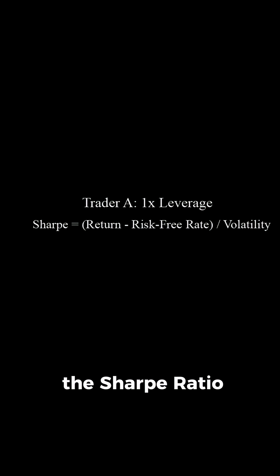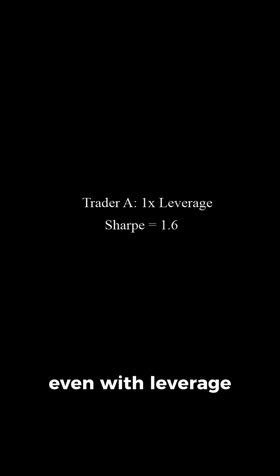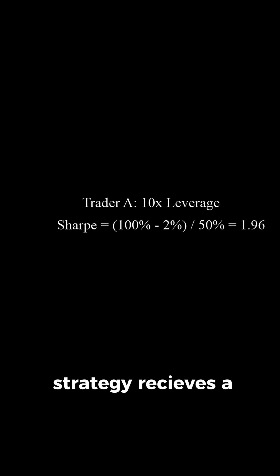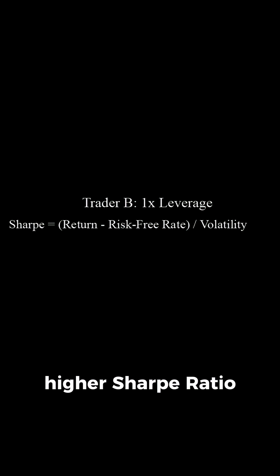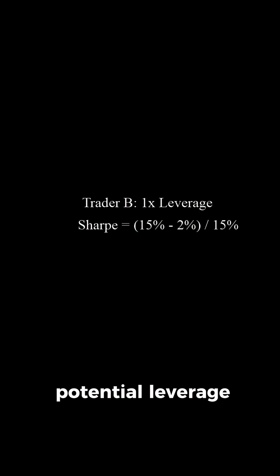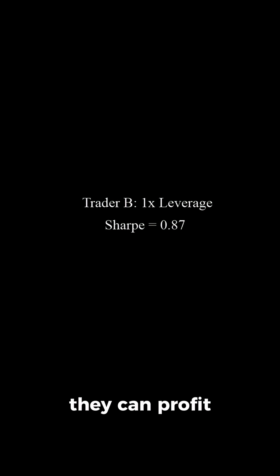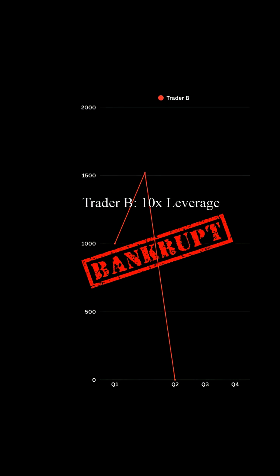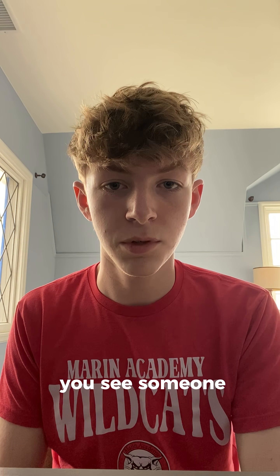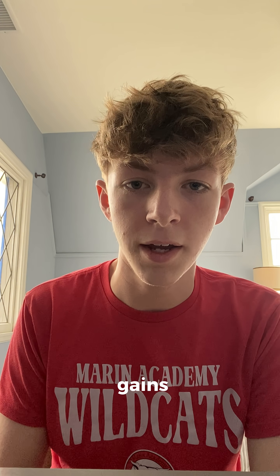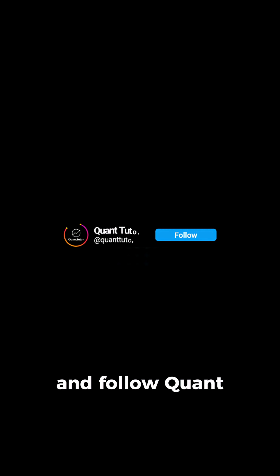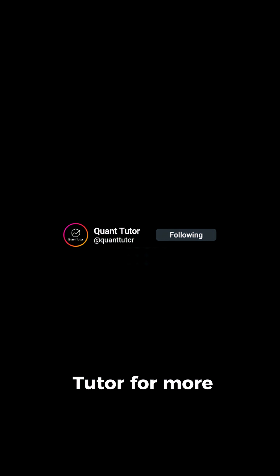This is what the Sharpe ratio calculates — how much return you make for each unit of risk, even with leverage. Thus, Trader A's strategy receives a higher Sharpe ratio, since with infinite potential leverage, they can profit more than Trader B before going bankrupt. So next time you see someone showing off huge gains, question their risk, and follow QuantTutor for more.